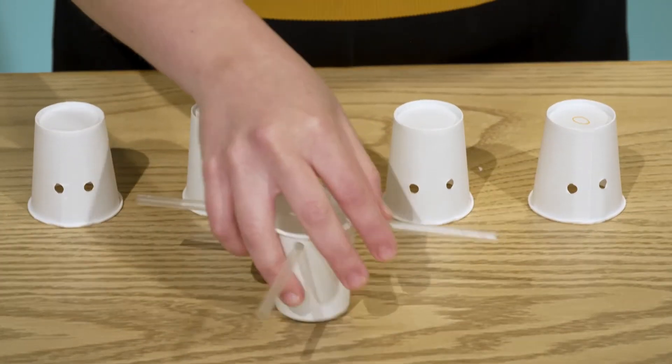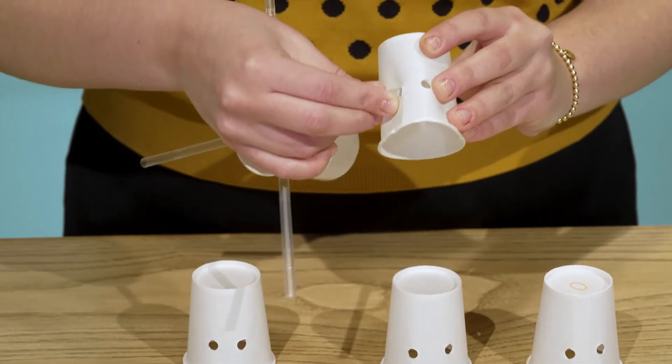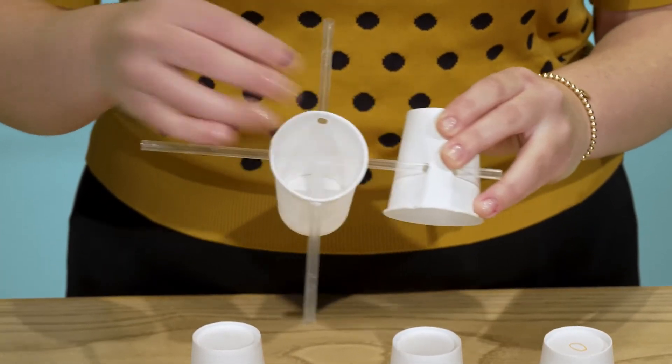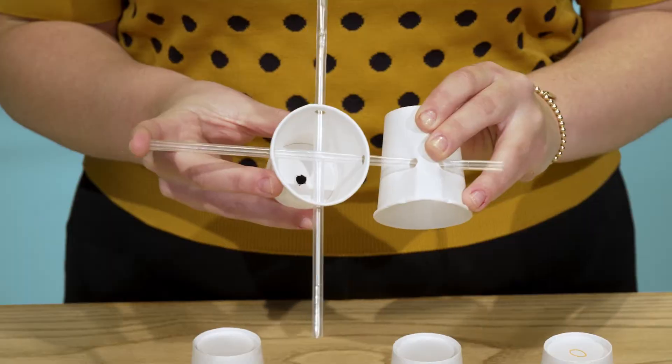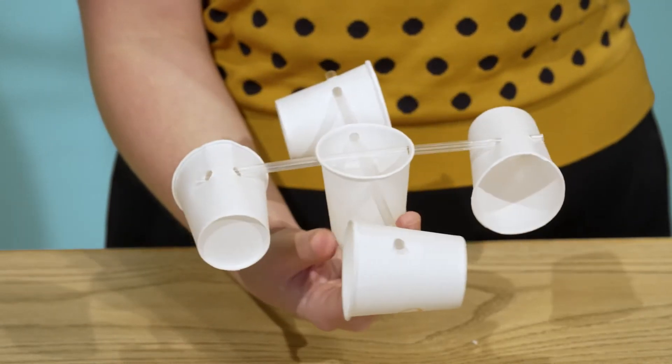Now it's time to connect everything together. Grab the first cup you made with the straws in it. Push the end of the straws through the two holes in the other four cups. This is very important. Make sure all your cups face the same direction.